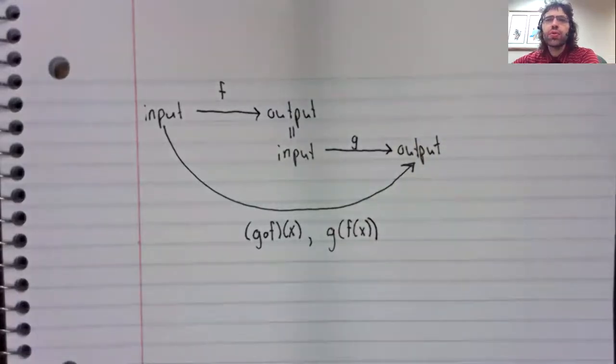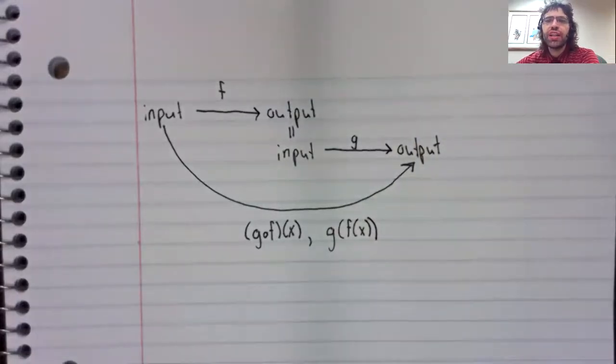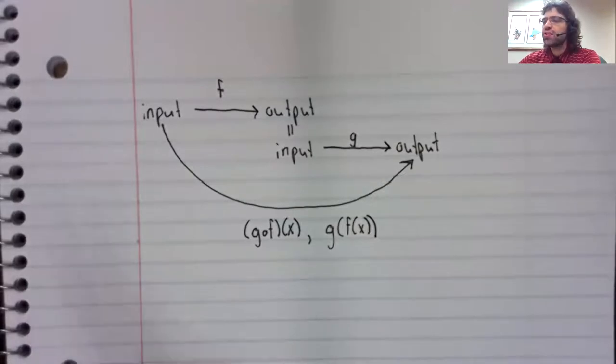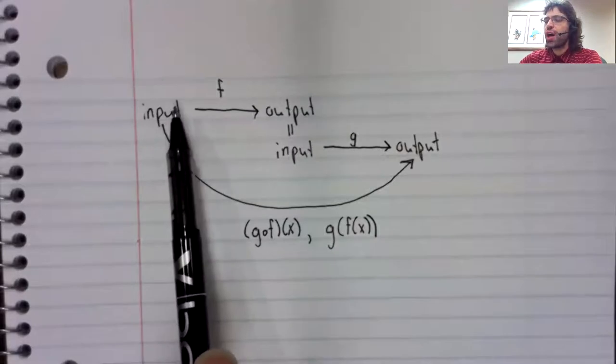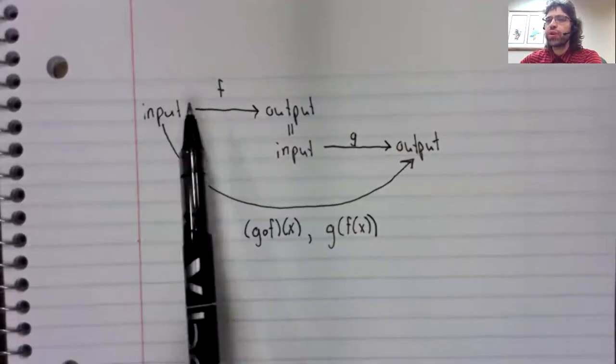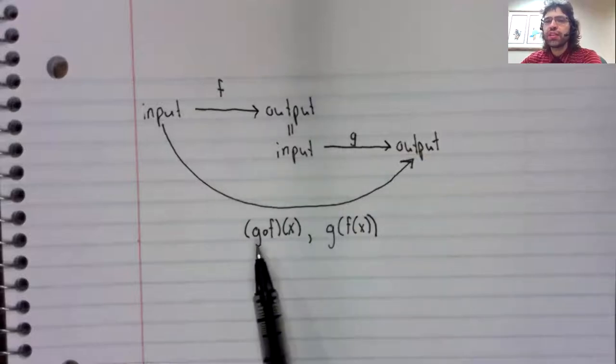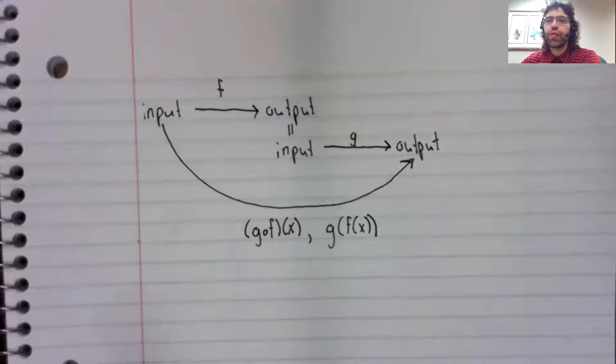Either way, notice that composition is written out of order. That is to say, if you follow this chart, F is first, G is second. But when you write the composition, G is written first.